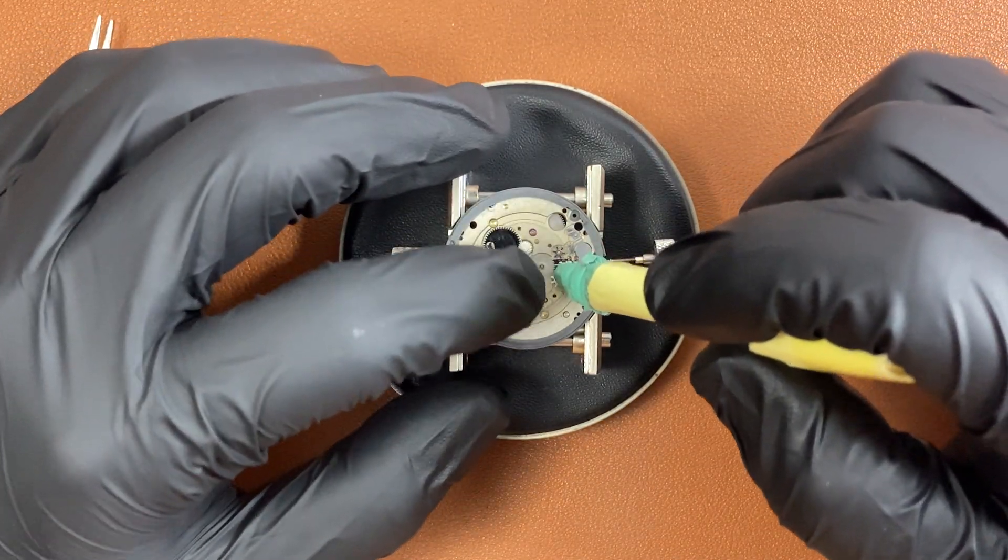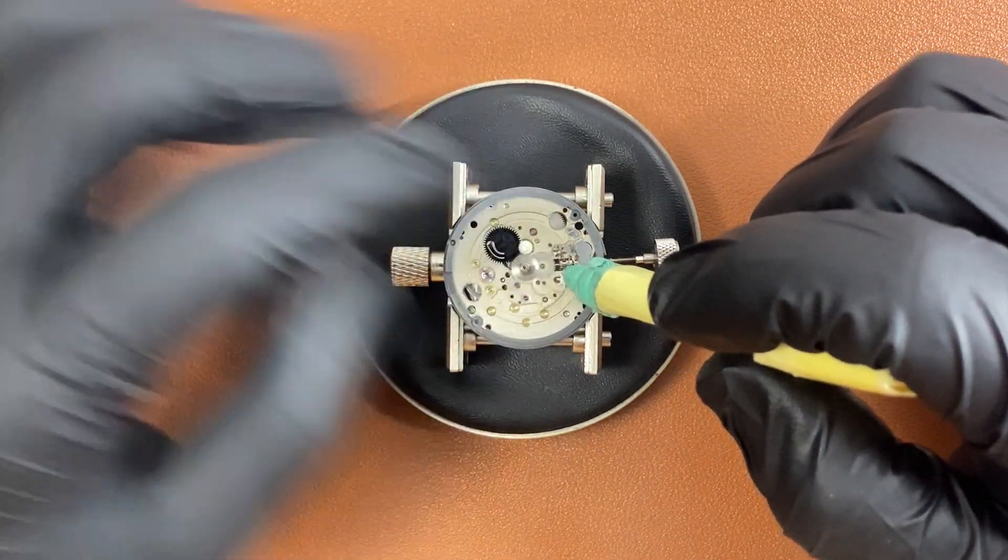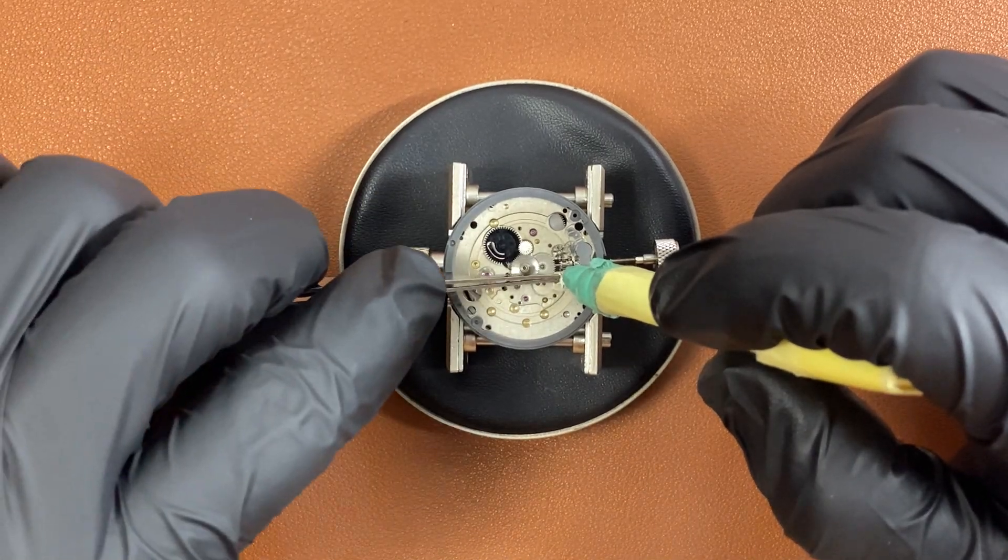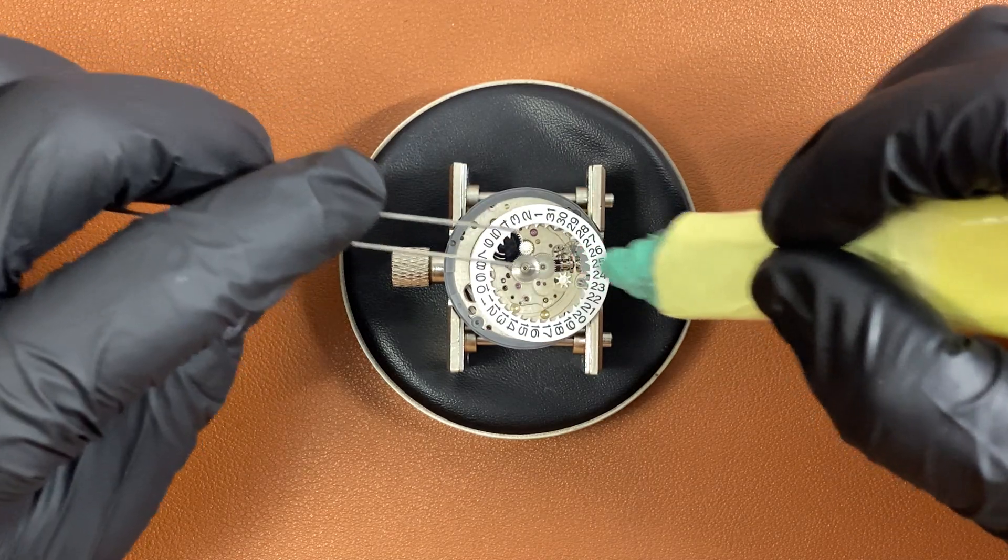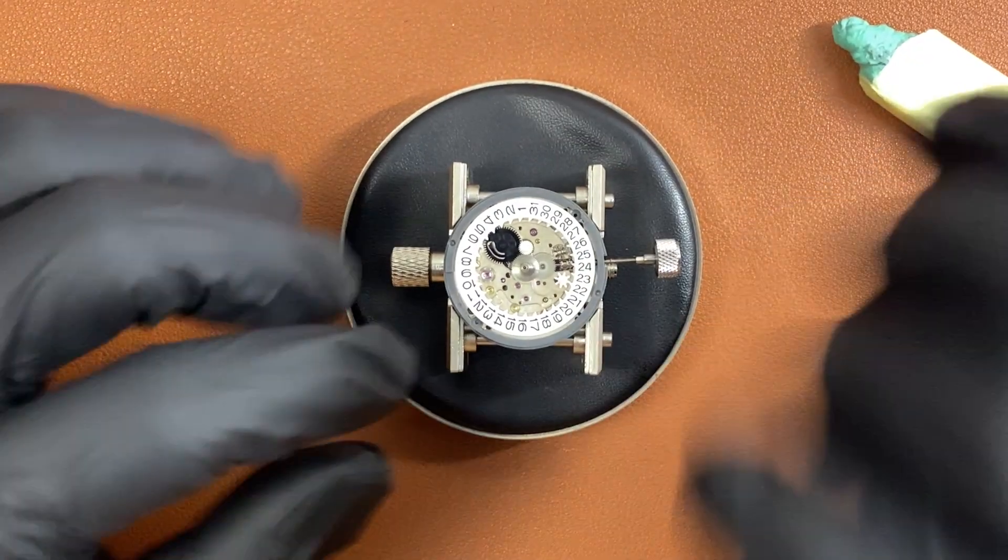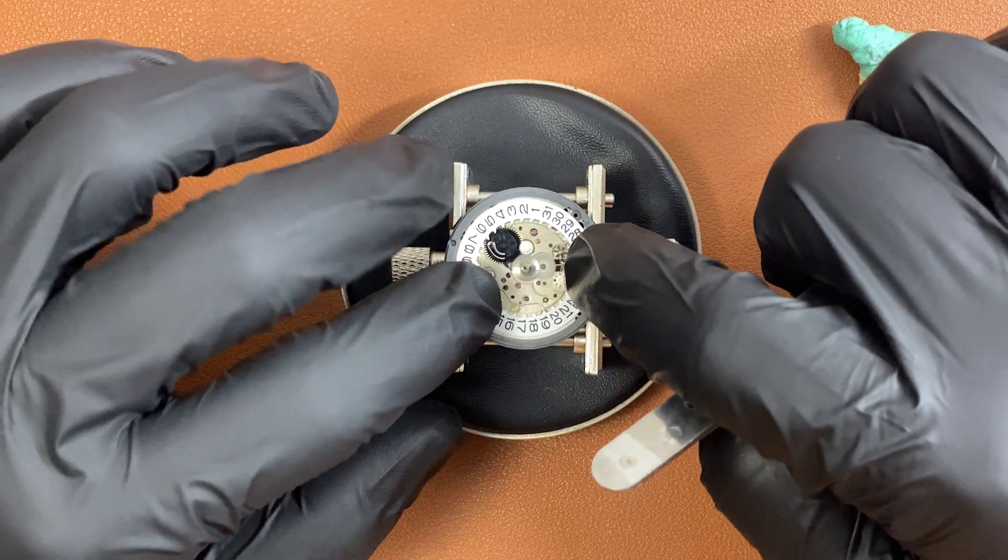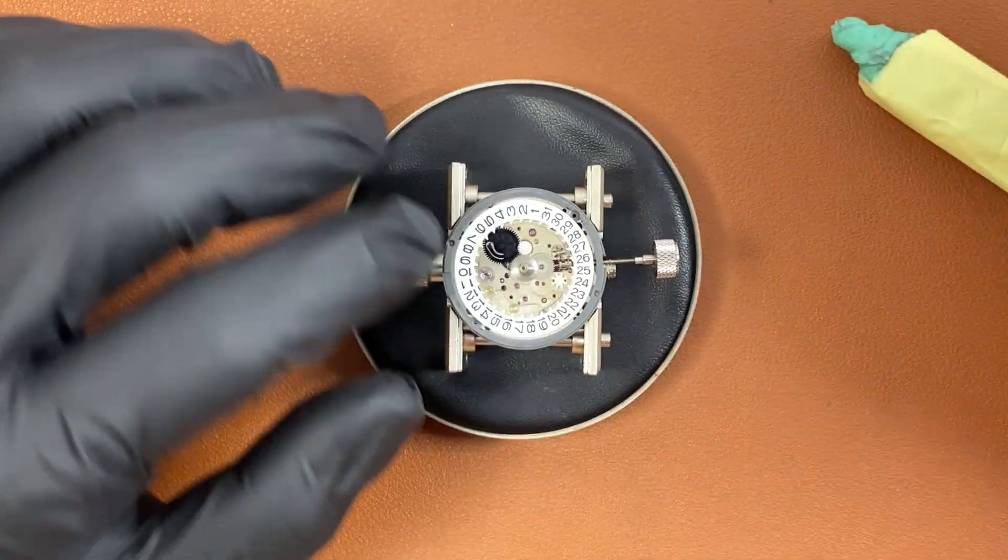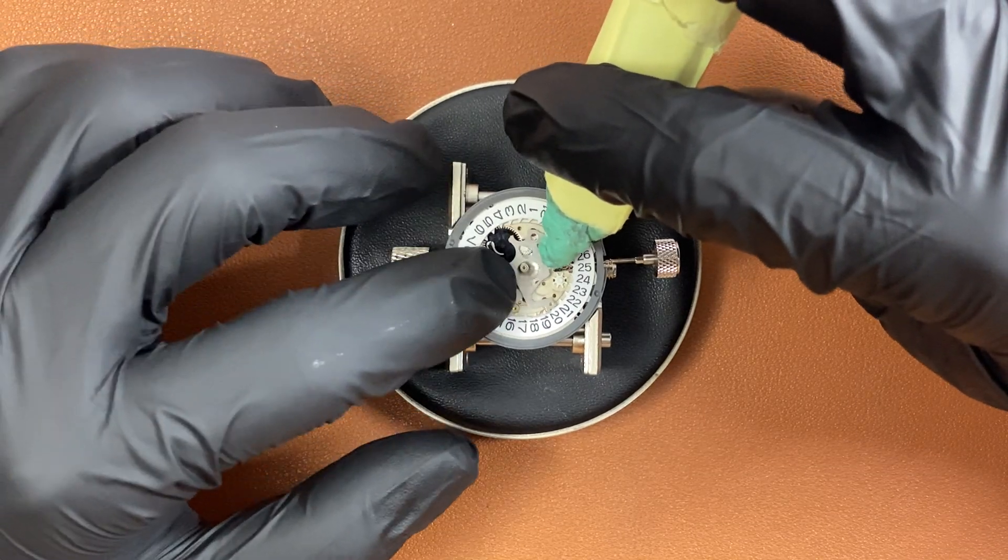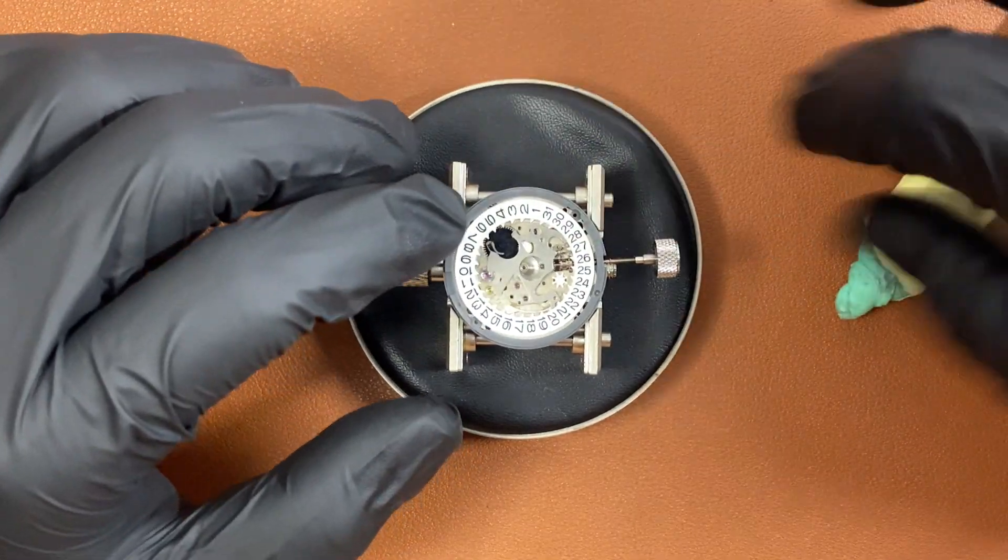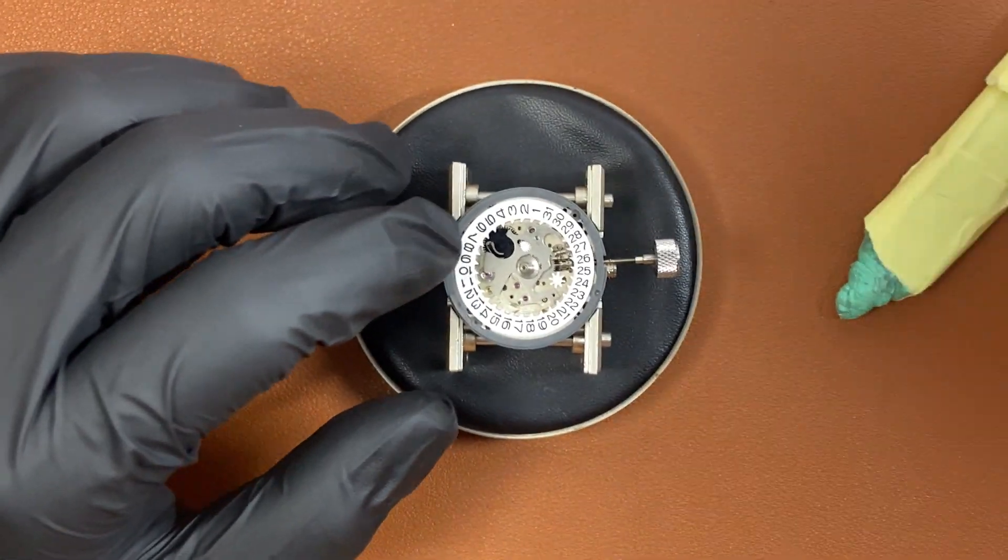Now putting back this plastic white gear. This is the gear that will be responsible for switching between the quick date change and the true GMT hand. Putting back the date wheel in and make sure the date wheel actually engages with the white gear you just placed earlier. And putting in this metal plate again, making sure it also engages with the date wheel.